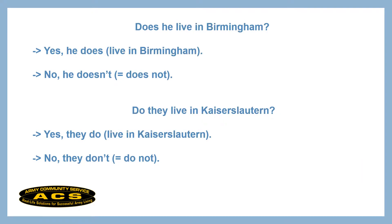It's also possible to ask a question with 'does' or 'do.' We use 'does' for the third person singular — he, she, it. For example, you could ask: Does he live in Birmingham?